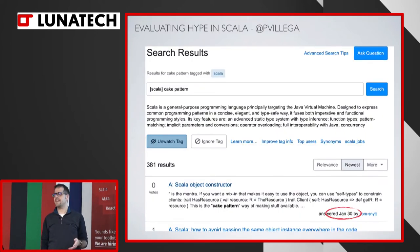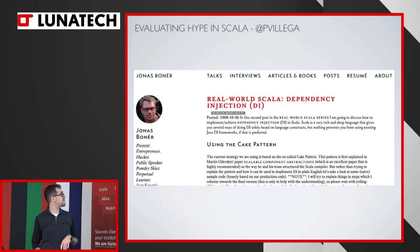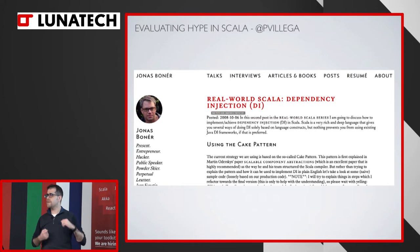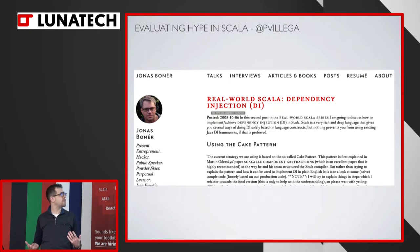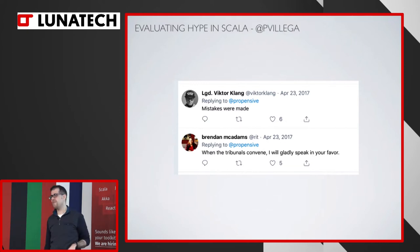The community loved it. Now you say Cake Pattern and it's like, oh, Cake Pattern, ha ha. But you look on Stack Overflow — Cake Pattern in Scala, 381 results, with somebody answering a question as recently as January 30 this year. Influential people like Jonas Bonner were writing blog posts about it: if you want to do Dependency Injection in Scala, that's the way to do it. It was the flavor of the year and people were using it. But then it became considered an anti-pattern.